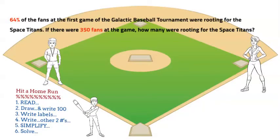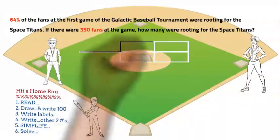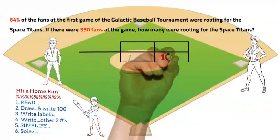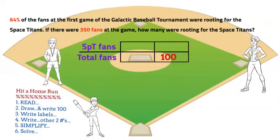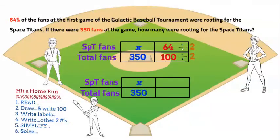Mandy, you're up. Here's your problem: 64% of the fans at the first game of the Galactic Baseball Tournament were rooting for the Space Titans. If there were 350 fans at the game, how many were rooting for the Space Titans? First, draw your graphic organizer and write 100 in the bottom right box. Look at the problem and write your labels — Space Titan fans over total fans. The 64 is a percent, so it goes on top of the 100. The 350 is total, so it goes in the bottom, and X is our numerator. Since 64 and 100 are even, you can divide them by two, and our resulting proportion is X over 350 equals 32 over 50.